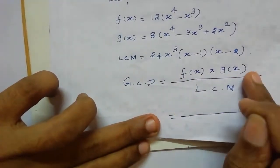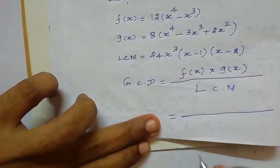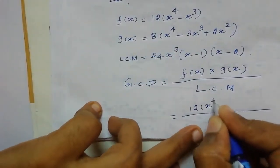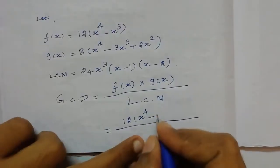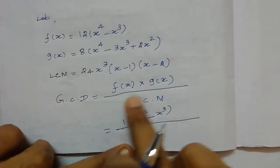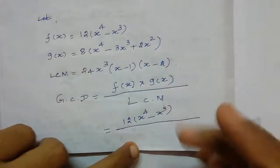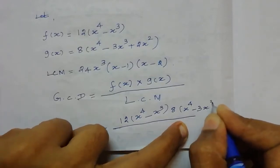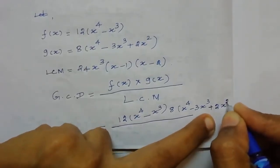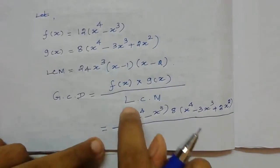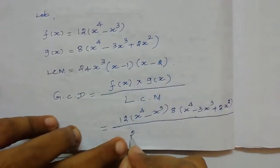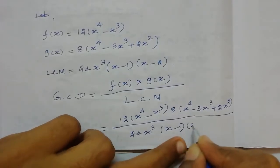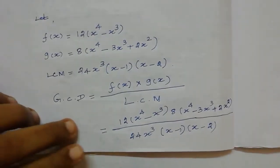See the question and write f(x) and g(x) in the denominator LCM. f(x) is 12x⁴ minus x³. g(x) is 8x⁴ minus 3x³ plus 2x². The LCM value is 24 × x³ × (x-1) × (x-2). Now we need to cancel the common factors.